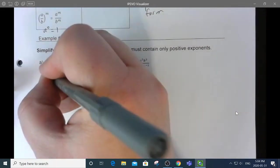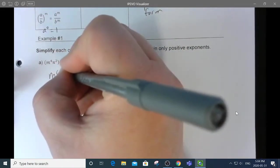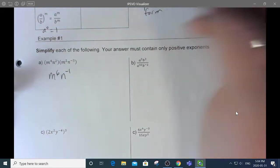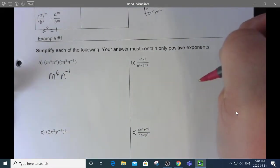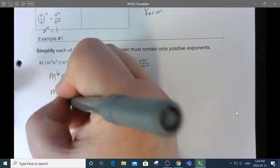m to the 4 times m squared is m to the 6, and n squared times n to the negative 3 is n to the negative 1, because we add the exponents. But we can only have positive exponents.